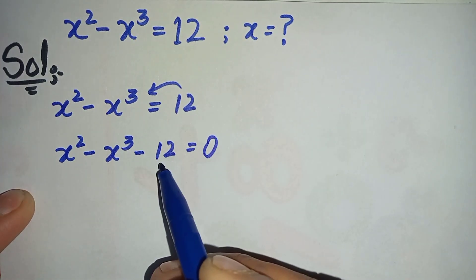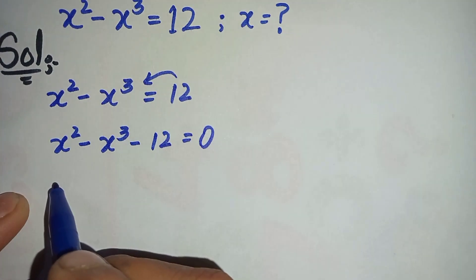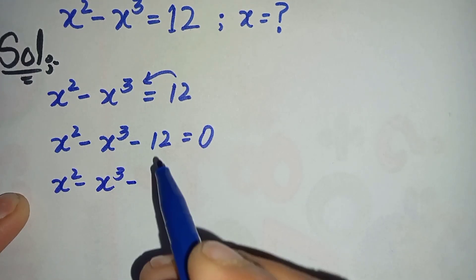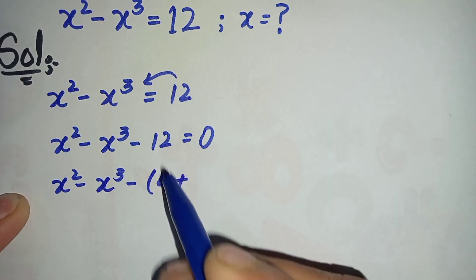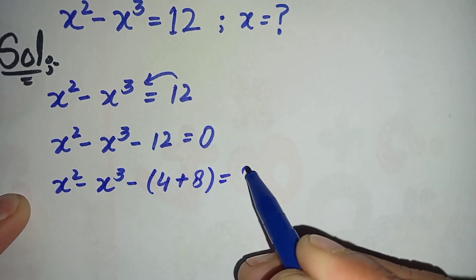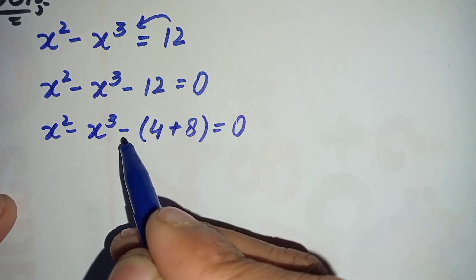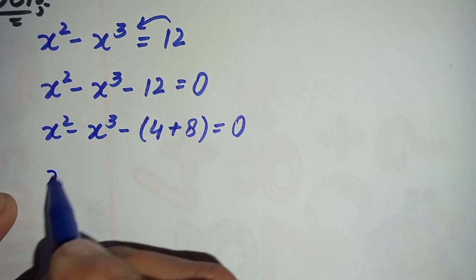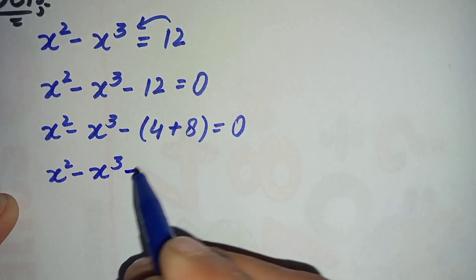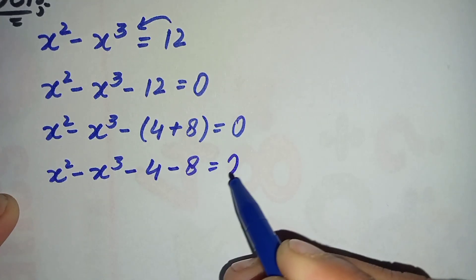Next, we change this 12 to the sum of 4 plus 8, so it becomes x squared minus x cubed minus (4 plus 8) is equal to 0. We multiply this negative sign inside the parenthesis, so it becomes minus 4 minus 8 is equal to 0.